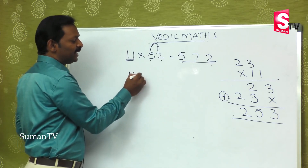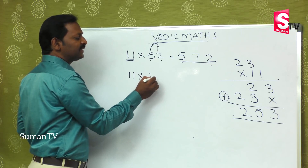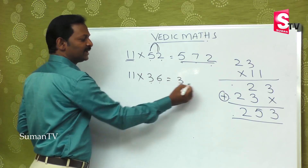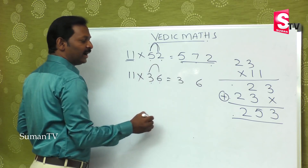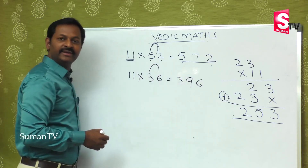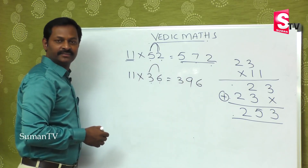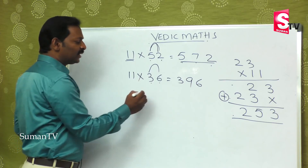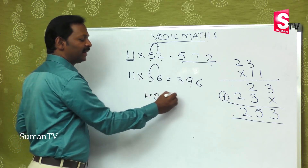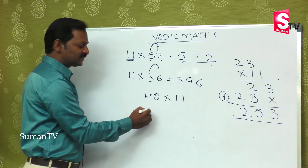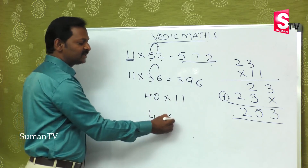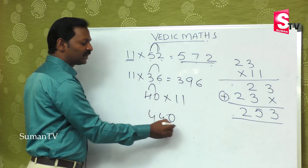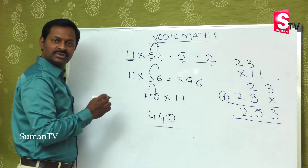11 is multiplied by 36. First number is 3, last number is 6. When you add 3+6=9, you get 9 in between — so the answer is 396. Again, 40 is multiplied by 11: first is 4, last digit is 0. Add 4+0=4, so the answer is 440. This is so simple.